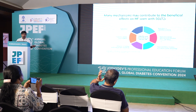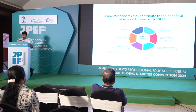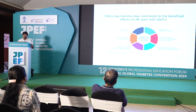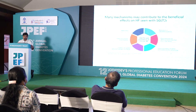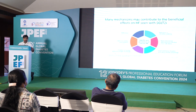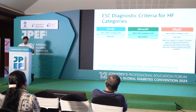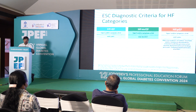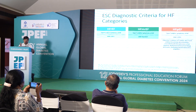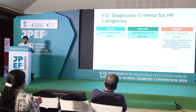This is how SGLT2s prevent heart failure. There is a reduction in interstitial edema, and a hemodynamic benefit in terms of glycosuria and diuresis, as well as cardiorenal physiology and natriuresis. We now have a better understanding of heart failure with preserved EF when the EF is more than 50, heart failure with reduced EF with EF less than 40, and mid-range heart failure.